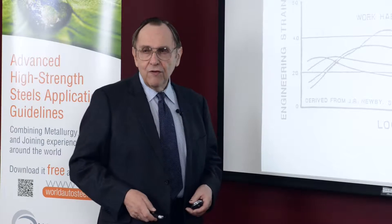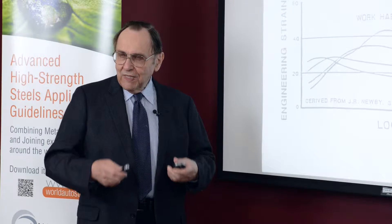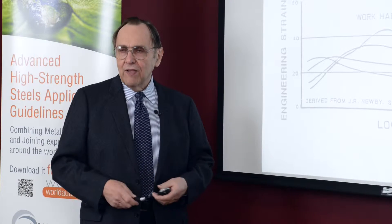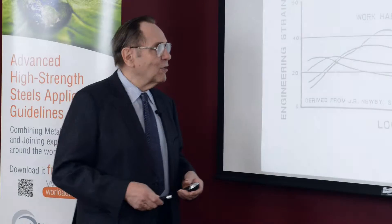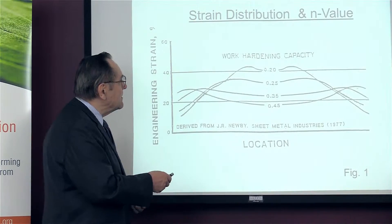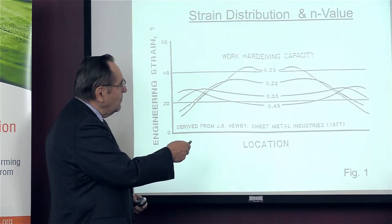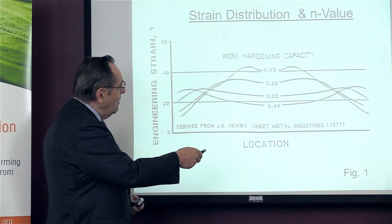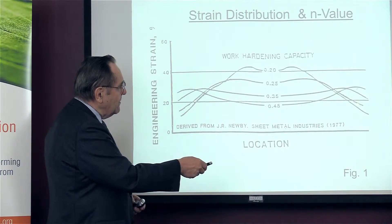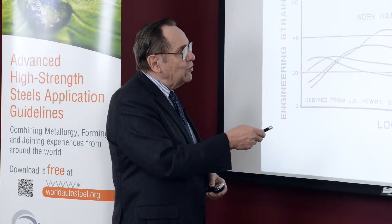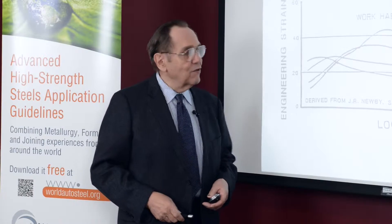If we go to an n value of 0.25, which is better for the material because a high n value is indicative of better stretchability capability, we see that we have less of a gradient and more of a distribution of the deformation. 0.25 would be a vacuum degassed interstitial free steel.